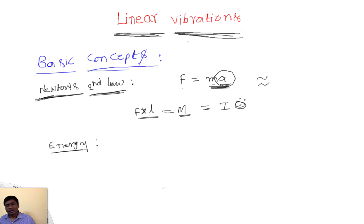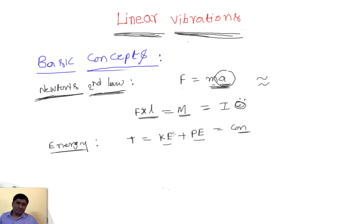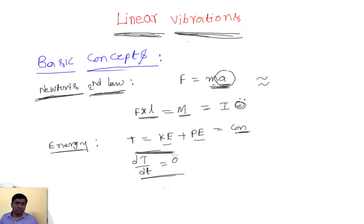In the energy method, energy is neither created nor destroyed — it is only converted from one form to another. The total energy at any point is always constant. For mechanical systems, total energy T equals kinetic energy plus potential energy, and this sum is constant. If we differentiate total energy with respect to time, it becomes zero. We make use of this concept to derive equations of motion.